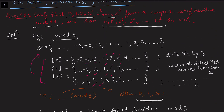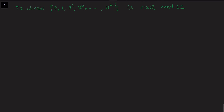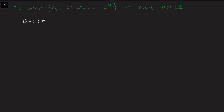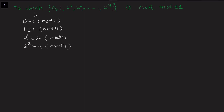Now the same thing we need to check in our question: verify whether {0, 1, 2, 2², ..., 2⁹} is a complete set of residues mod 11. We can easily see there are 11 elements, and we just need to check none of them are congruent to each other — i.e., they each cover a distinct residue from 0 to 10. So: 0 ≡ 0 (mod 11); 1 ≡ 1 (mod 11); 2¹ ≡ 2 (mod 11); 2² ≡ 4 (mod 11); 2³ = 8 ≡ 8 (mod 11); 2⁴ = 16 ≡ 5 (mod 11).